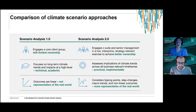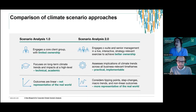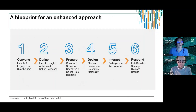The idea is that this process helps achieve better ownership and drives decisions when it comes to acting on climate change. We also put together a process that understands the impacts of climate change across business-relevant time frames in a way that is practical, implementable, and takes into account the direction of travel of the business. Lastly, this process considers tipping points — understanding that the way climate change impacts businesses is not linear, taking into account wider climate trends like melting Arctic sea ice and other macro trends.